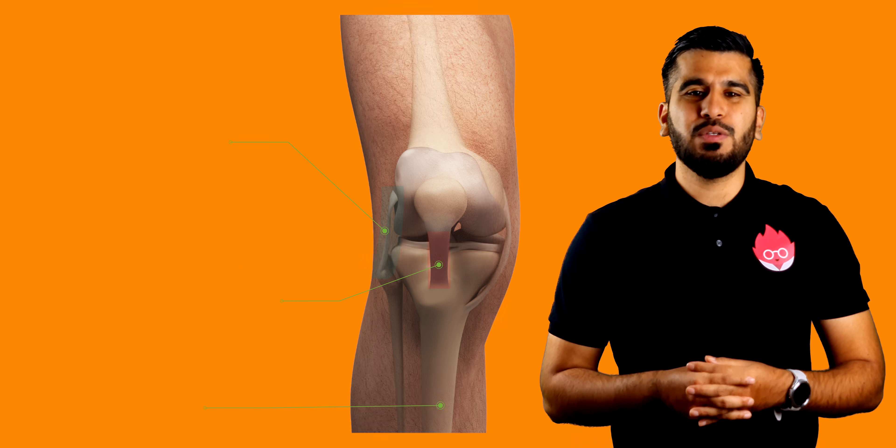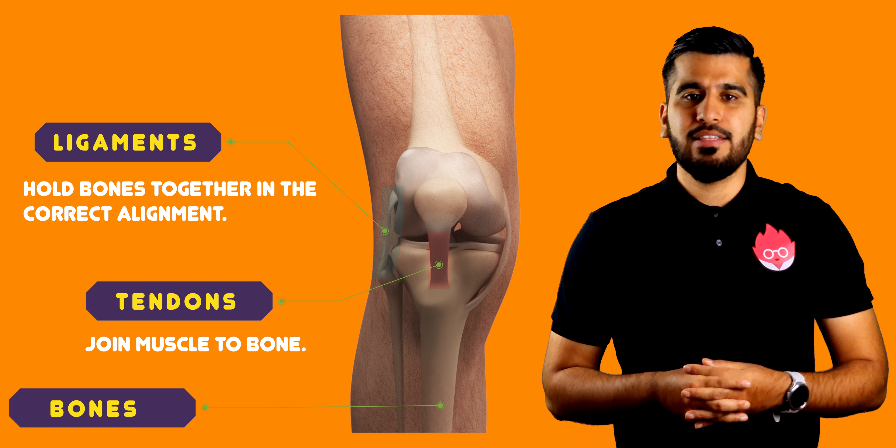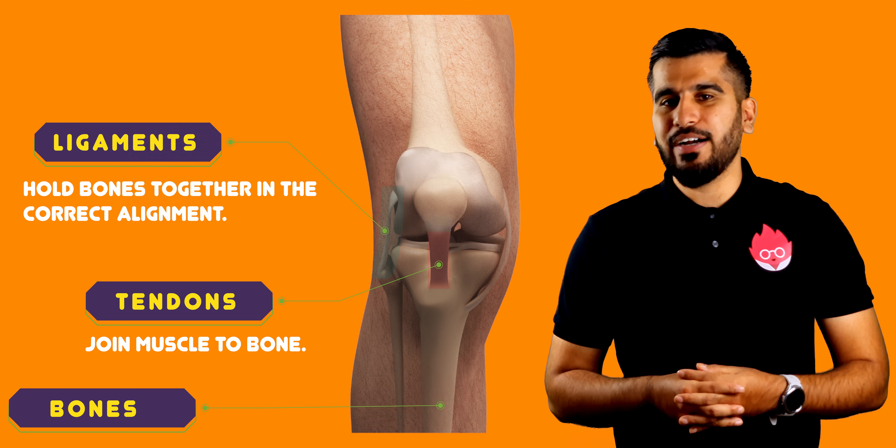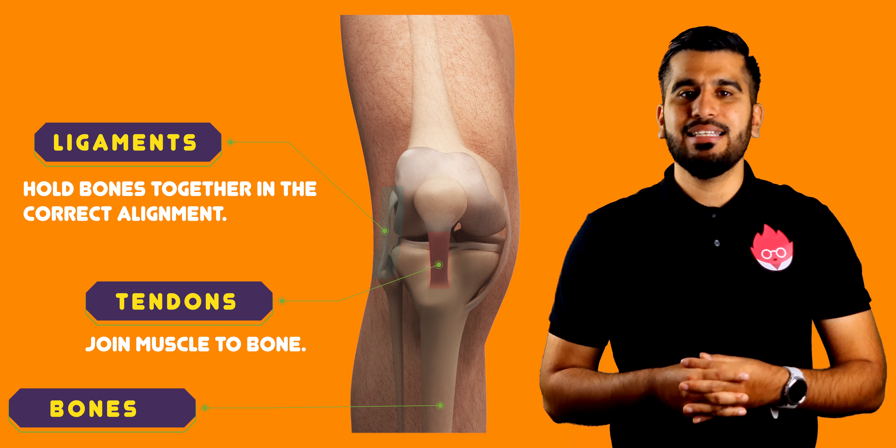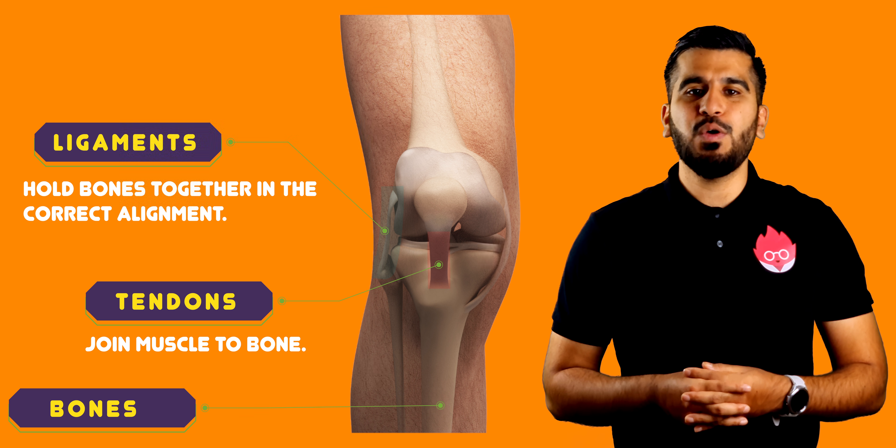Examples include collagen. These proteins provide strength to ligaments, tendons, bones and skin, being the most common structural protein found in animals.